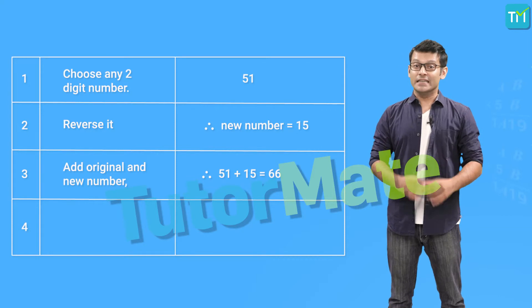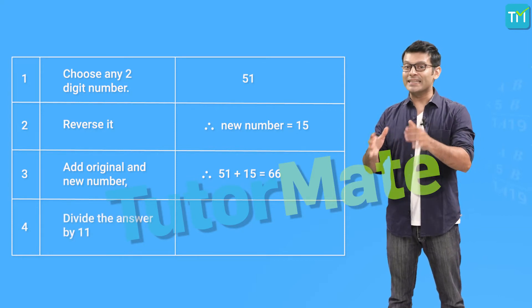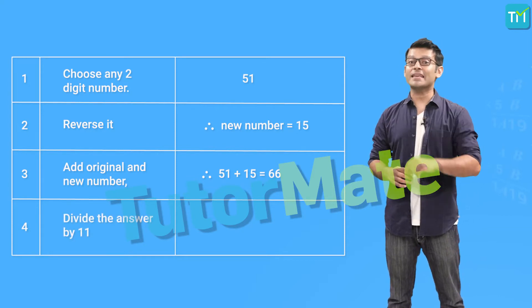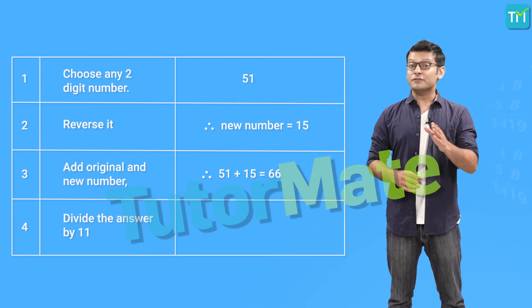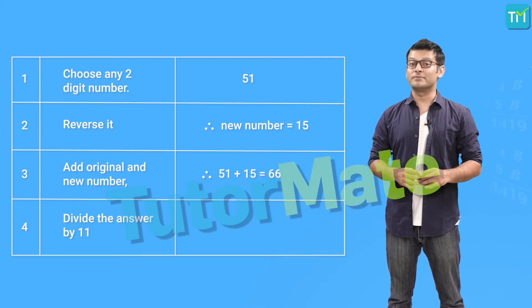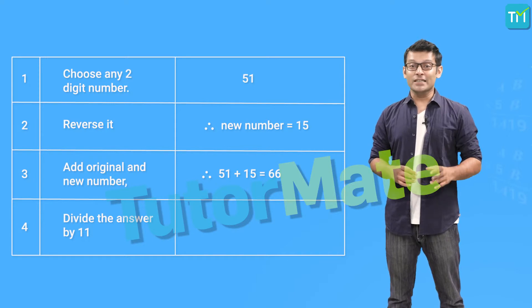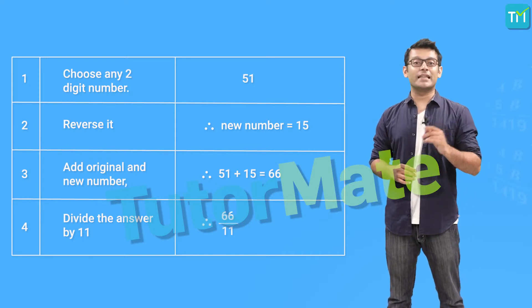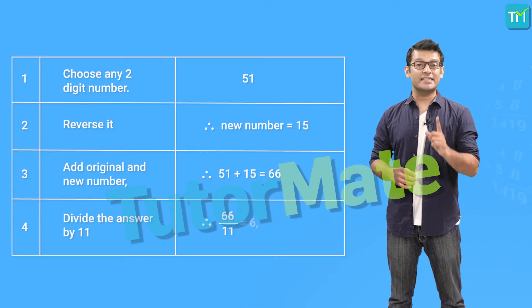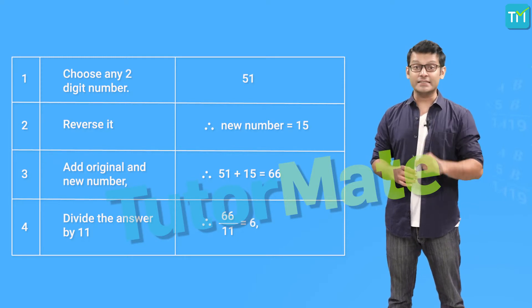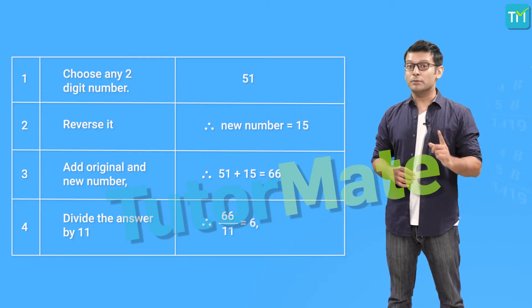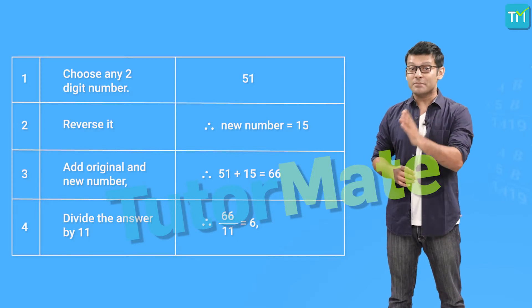And finally, divide the answer by 11. I can tell you that the remainder after you divide the number by 11 is 0. You see, when 66 is divided by 11, we know that 11 sixes are 66, that is 66 is a multiple of 11, so we get the remainder as 0.